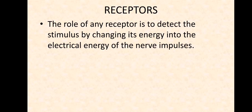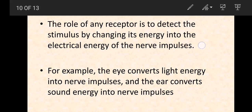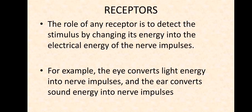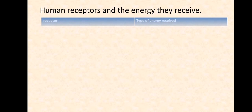The role of any receptor is to detect the stimulus by changing its energy into the electrical energy of nerve impulses. For example, the eye converts light energy into nerve impulses, and the ear converts sound energy into nerve impulses. So any receptor changes its energy form into electrical energy so the body can process it. We're going to look at some receptors in our body.